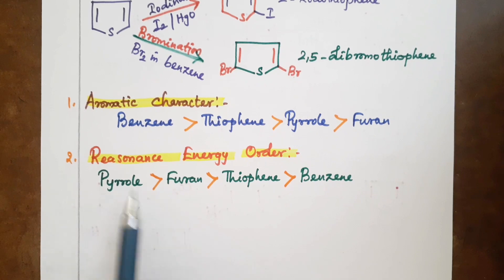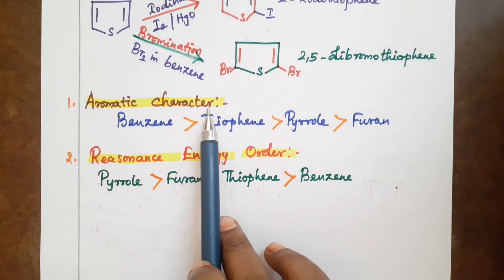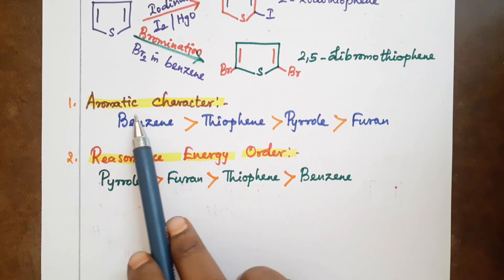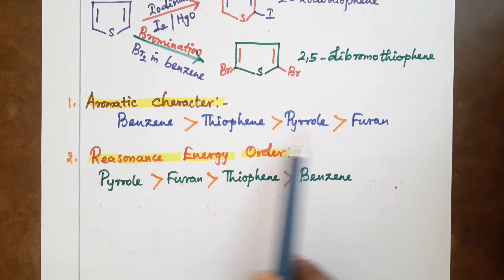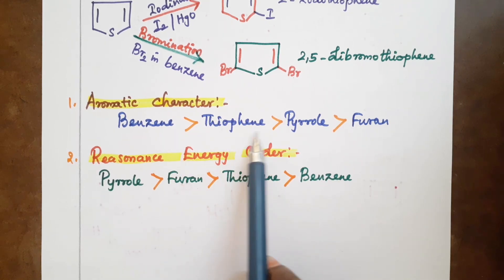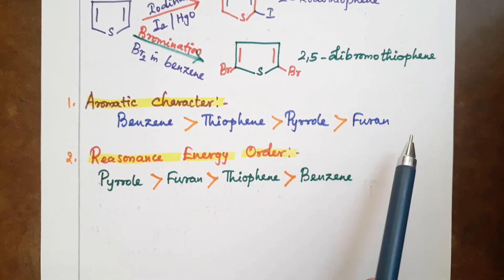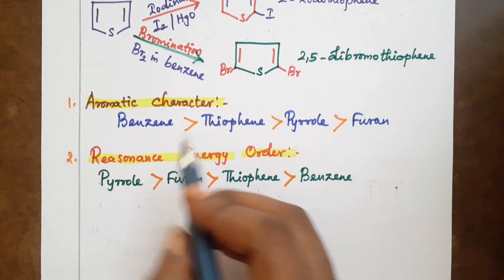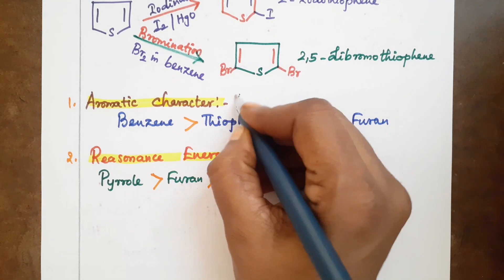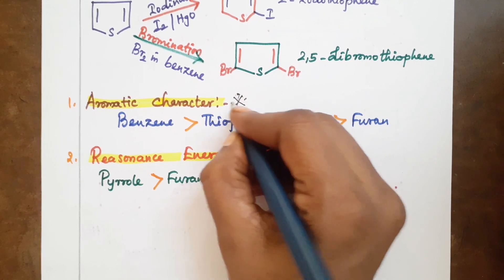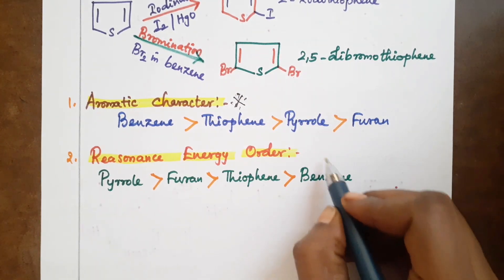Overall, we discuss thiophene and its aromatic character. Aromatic character order: benzene is greater than thiophene, thiophene is greater than pyrrole, pyrrole is greater than furan. This is important.